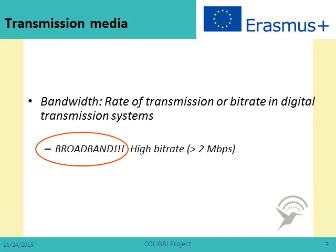Based on how much information a transmission medium can send per second, we can divide networks into broadband and non-broadband. Broadband networks or systems are those with a bit rate higher than two megabits per second. Less than two megabits per second is not considered broadband; two megabits per second or higher is the threshold for a system to be considered broadband.